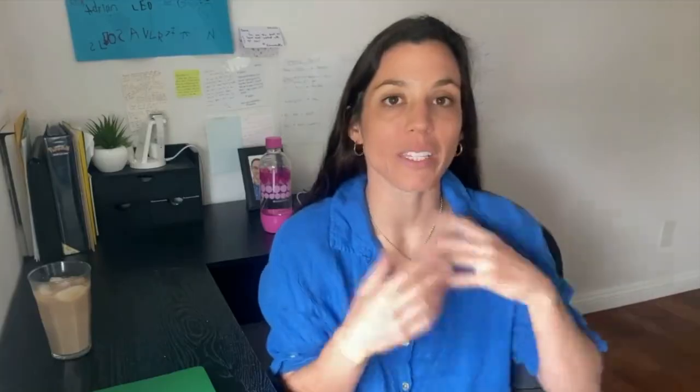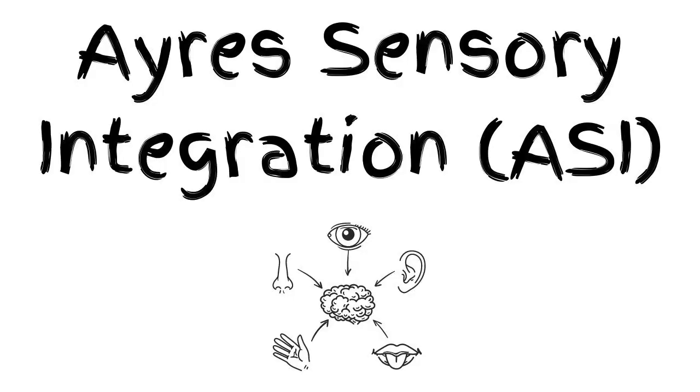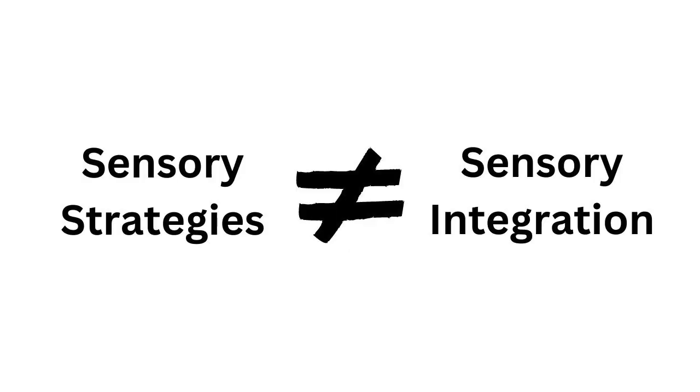Sensory strategies are used throughout the day as needed. Another type of sensory we are known for is something called Ayres Sensory Integration, or ASI, which is completely different but often conflated with sensory strategies.